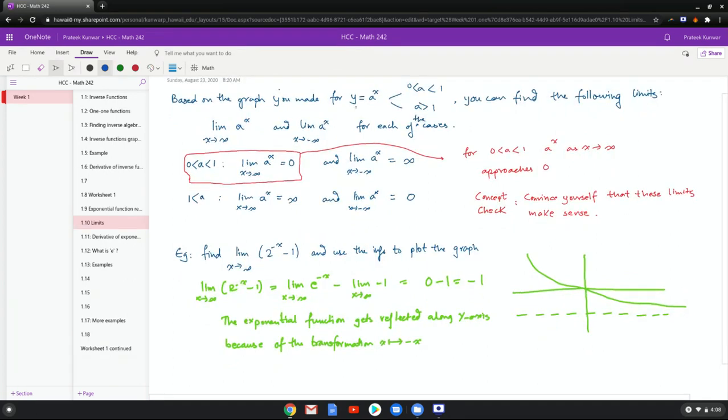Now what you can do is based on the graph that you made for the family of exponential functions, you can find these following limits. What happens as x goes to infinity and x goes to negative infinity for each of the following four cases.